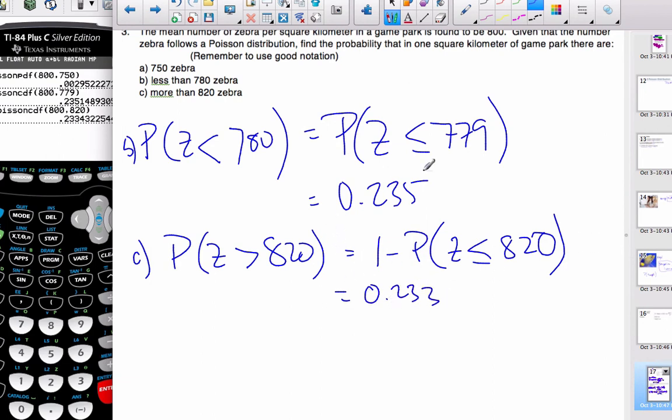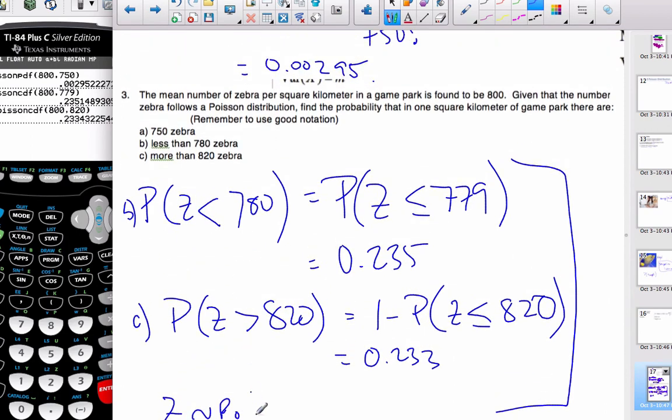If this was an IB question, the fact that I had defined Z ~ Po(800) here would be full marks. This is all the work you have to show. This is all the work you have to do. Thank you.